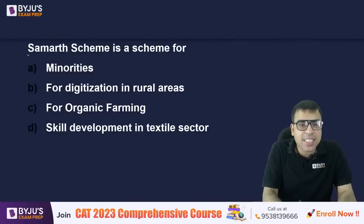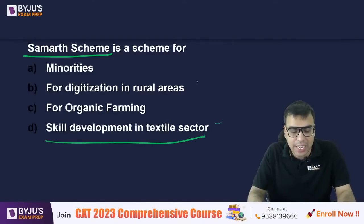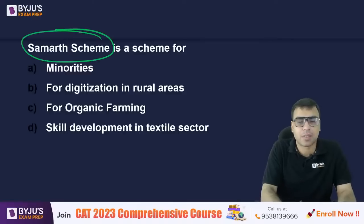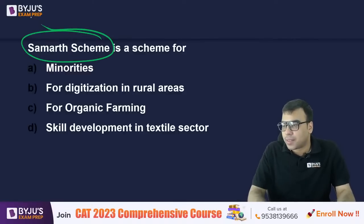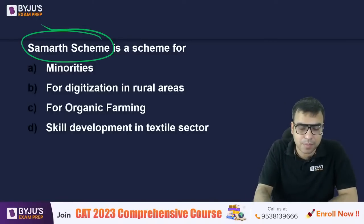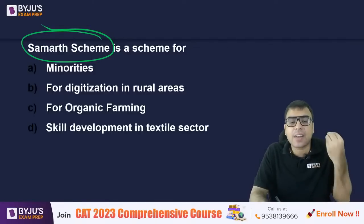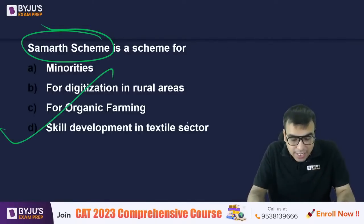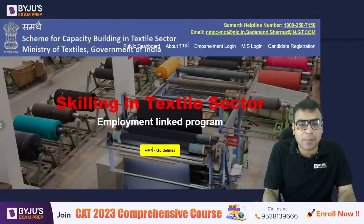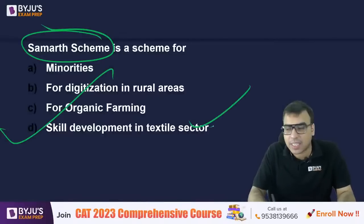SAMARTH scheme is for what? Options: minorities, digitization in rural areas, organic farming, or skill development in the textile sector. The right answer is D — skill development in the textile sector. Go and find out the full form of SAMARTH after class.